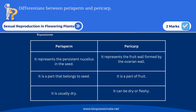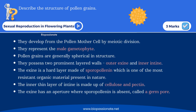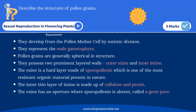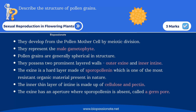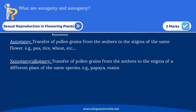First, you need to understand what they are. Pericarp is a part of the fruit; perisperm is a part of the seed. Another frequently asked question is about pollen grains — for three marks, describe the structure of pollen grains. Remember the diagram: double-layered spherical structure, outer exine with sporopollenin, and inner intine with pectocellulose.